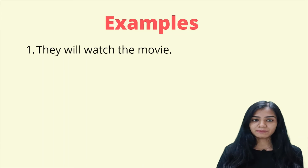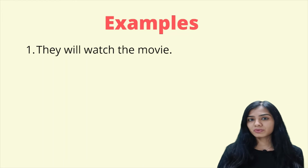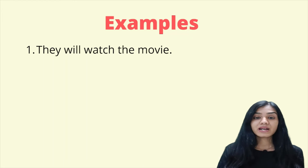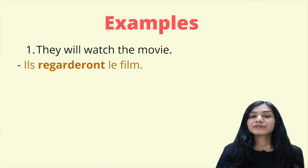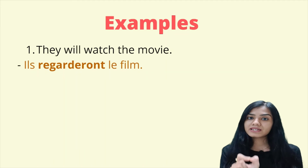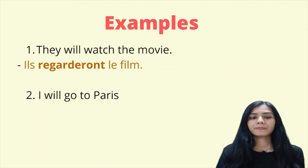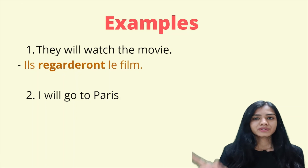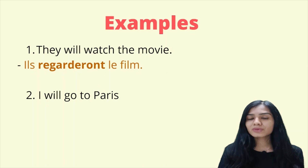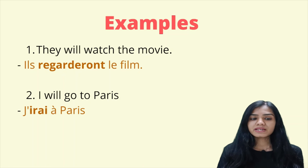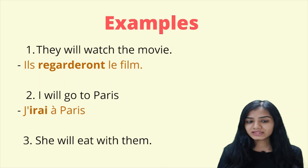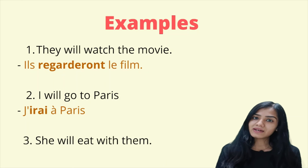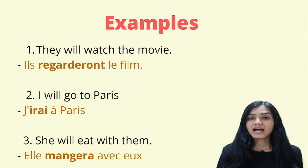Let's see a few examples. First: 'They will watch the movie.' To watch is 'regarder' — converting to futur simple gives 'Ils regarderont le film.' 'Regarder' stays the same through ER and we add 'ont.' Second: 'I will go to Paris.' To go is 'aller,' which is an irregular verb, so it becomes 'J'irai à Paris.' Third: 'She will eat with them.' To eat is 'manger,' giving us 'Elle mangera avec eux.'